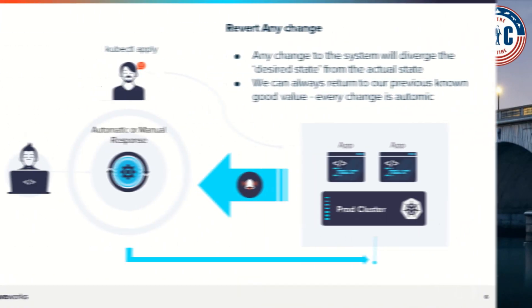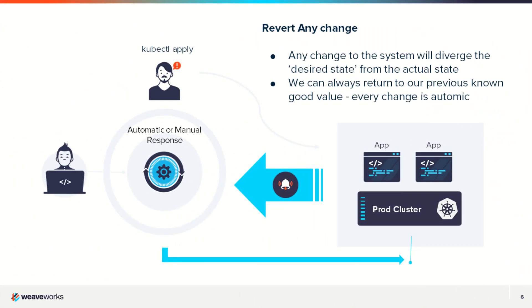Now let's take a look at a malicious actor going manually to apply a change using kubectl apply. That change is immediately detected in production by the GitOps capability and is reverted back immediately. Any change that diverges from the desired state is reverted. You can always return to your previous known state at any time.